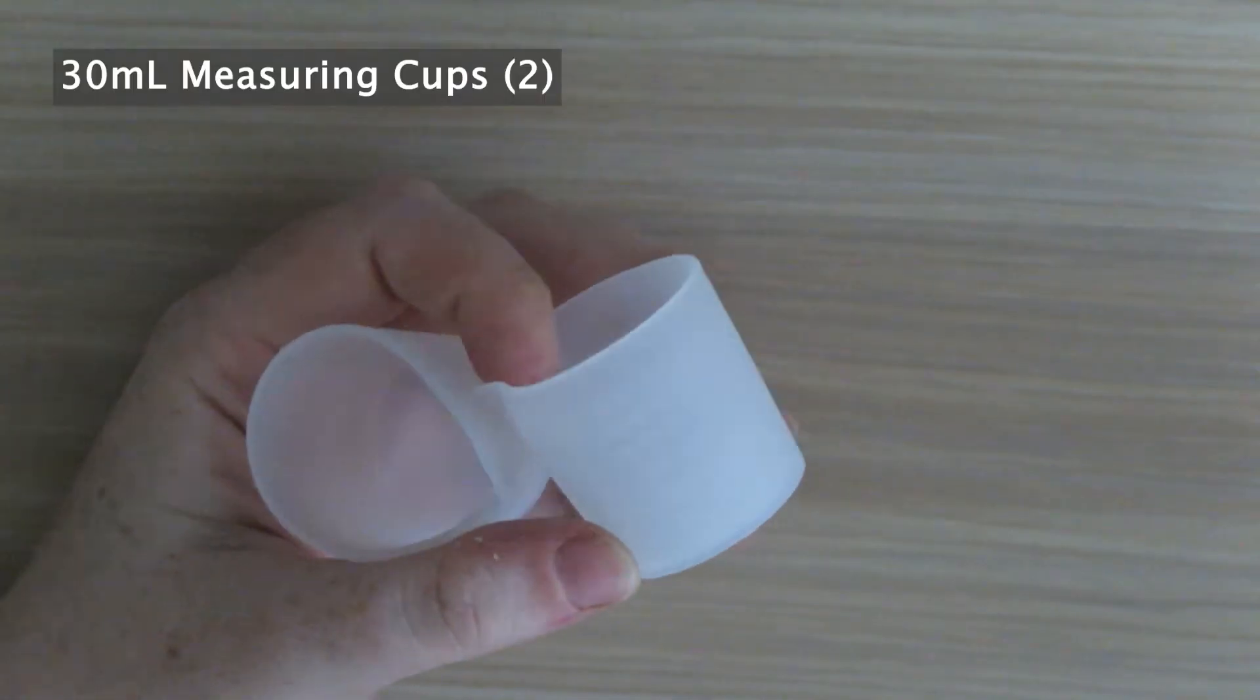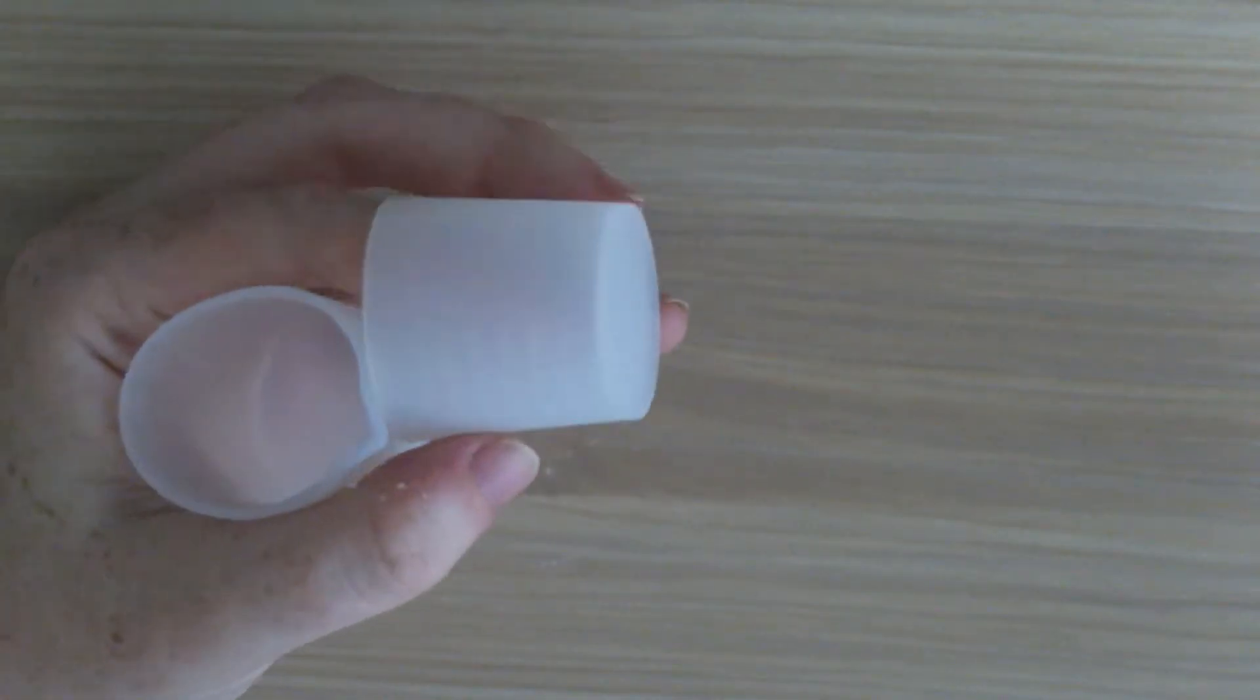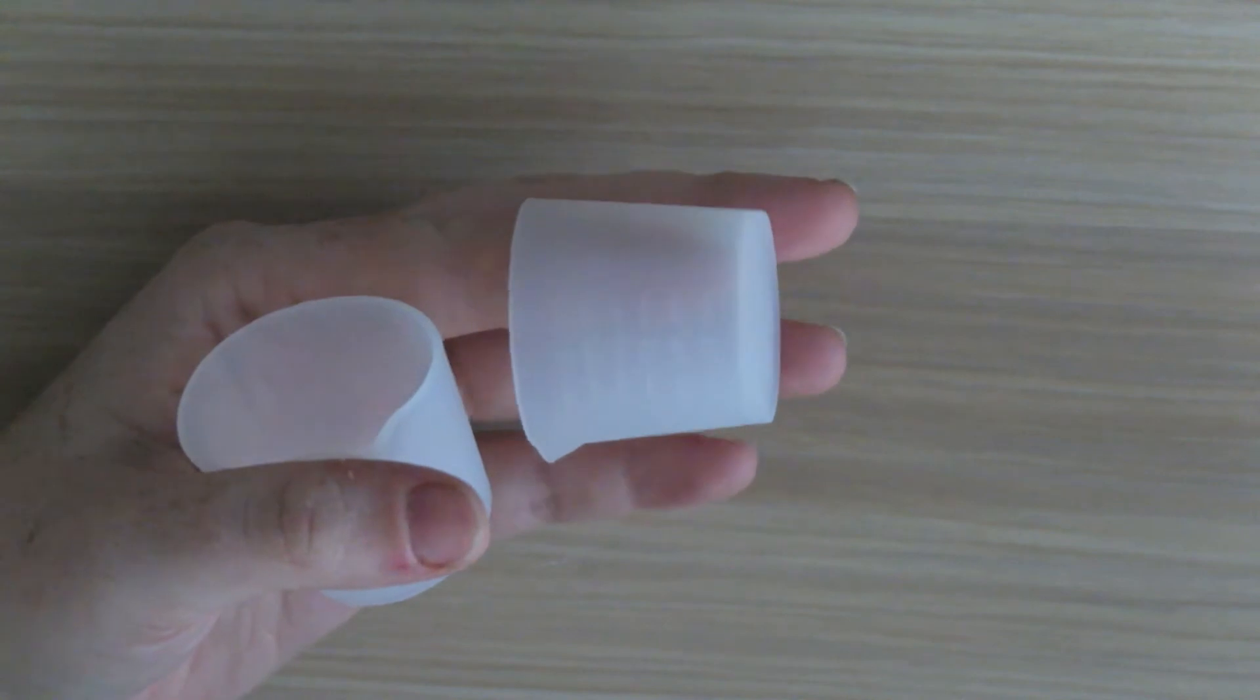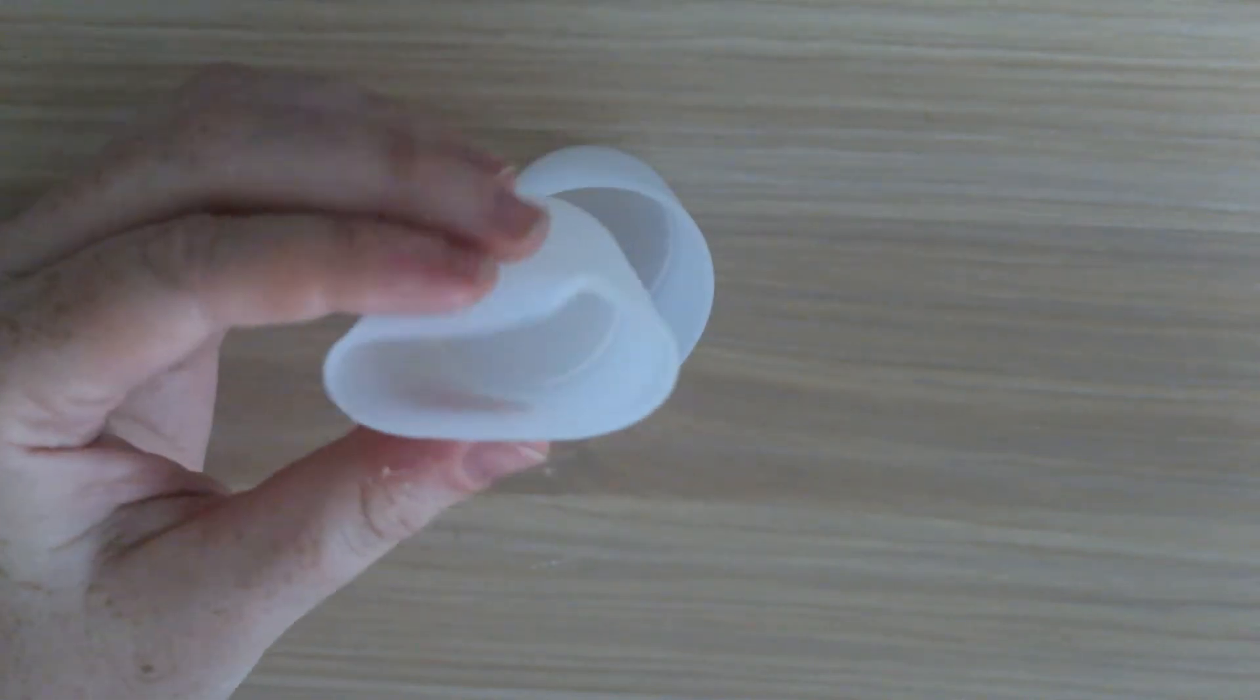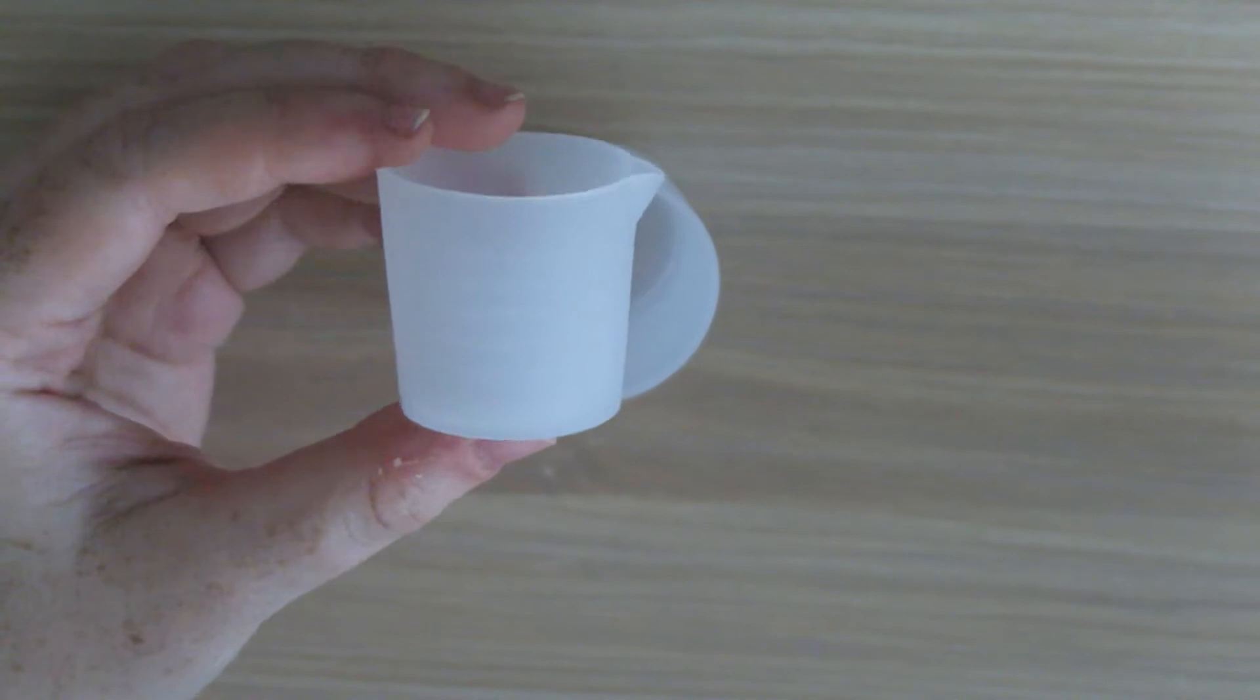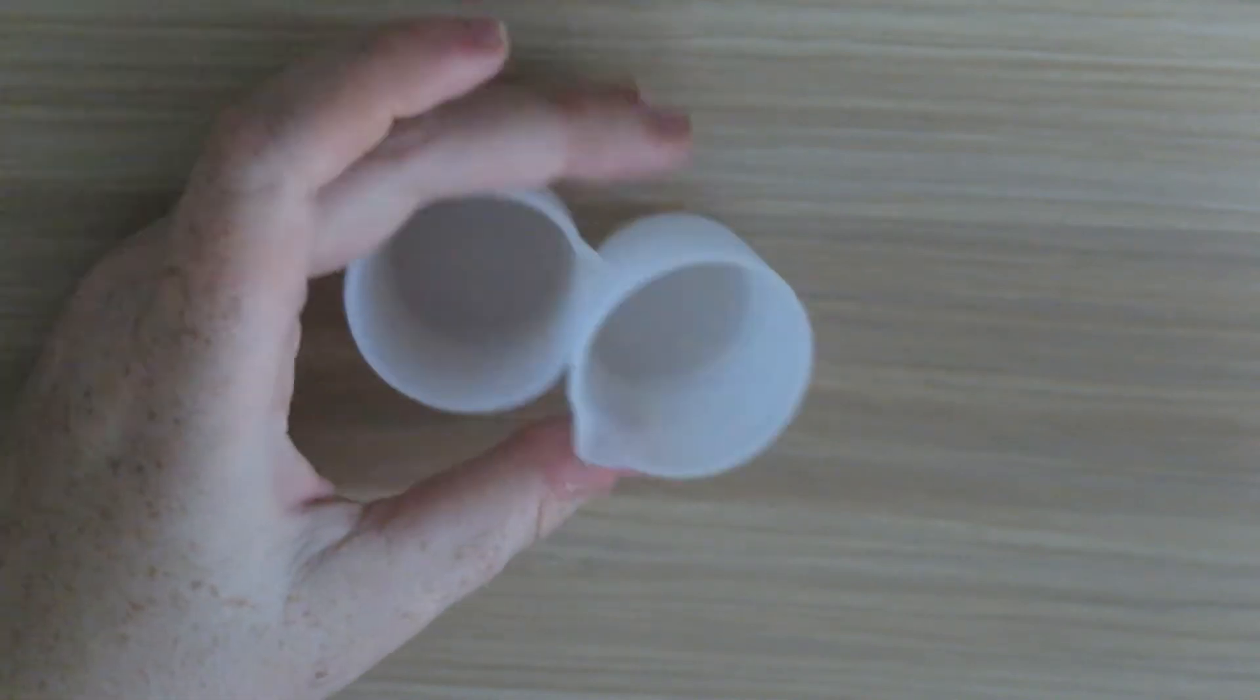Next we have a couple silicon measuring cups. These are perfect for making small batches of resin as they only go up to 30 milliliters, but of course they are reusable and I find them really useful for working on small projects.